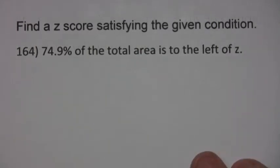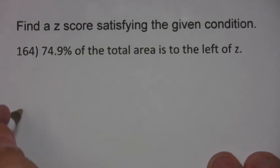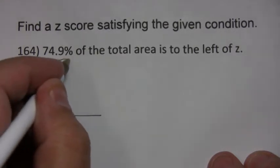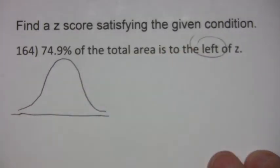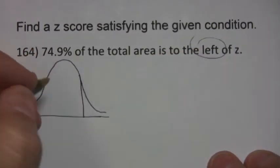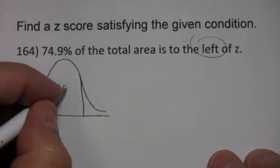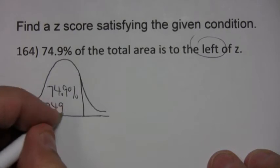Find the z score satisfying the given condition. 74.9% of the total area is to the left of z. Now this is actually easier than the previous problem because it says to the left and the table gives you the left.